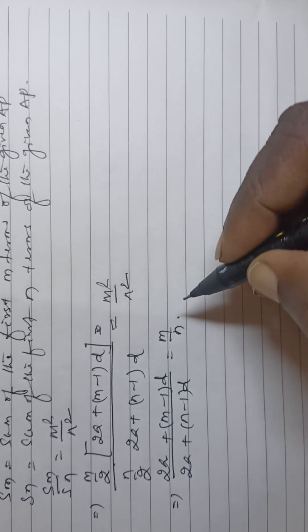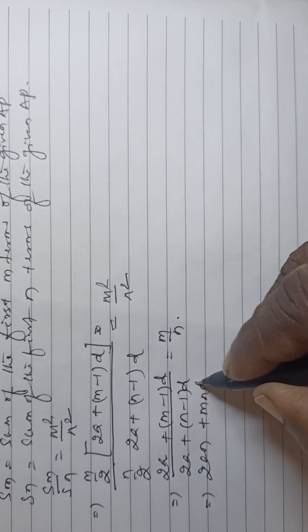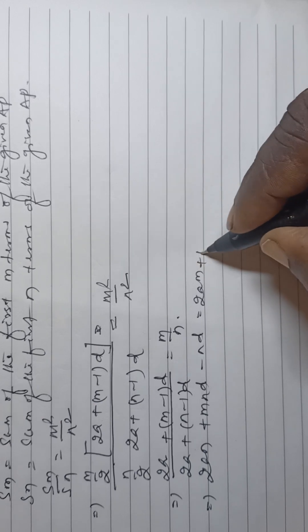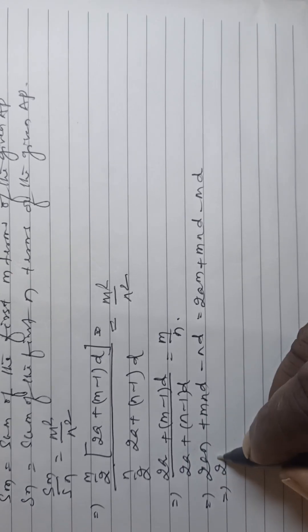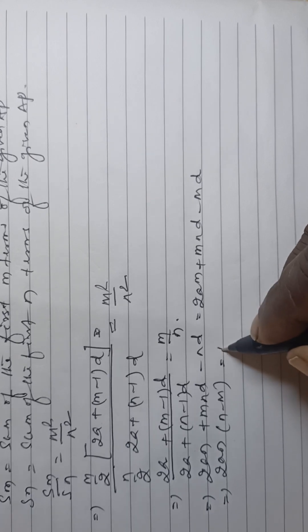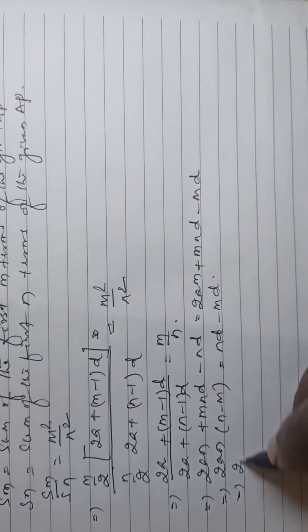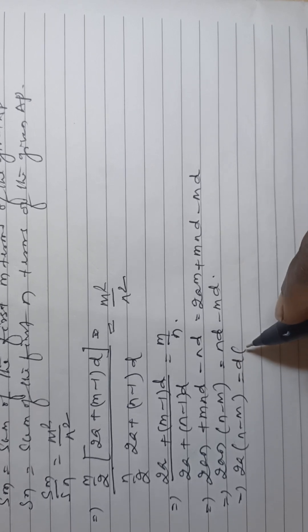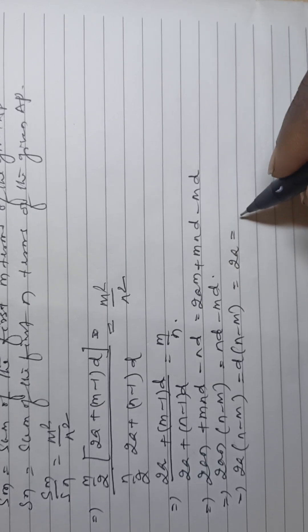Cross-multiplying: n(2a + (m-1)d) = m(2a + (n-1)d). Expanding and simplifying, we get 2an + mnd - nd = 2am + mnd - md, which reduces to (n - m) · 2a = (n - m)d, giving us d = 2a.